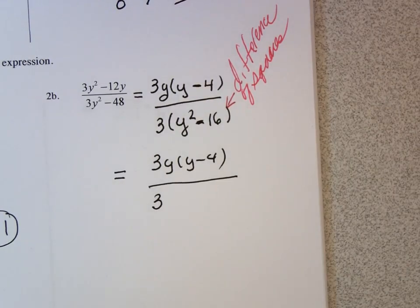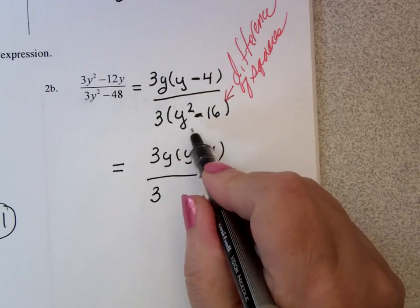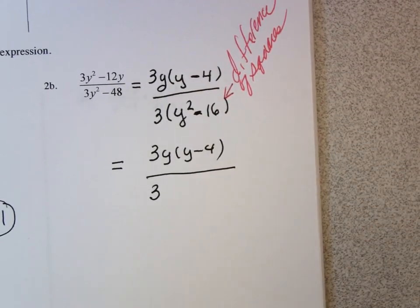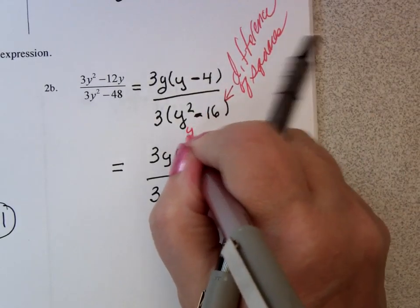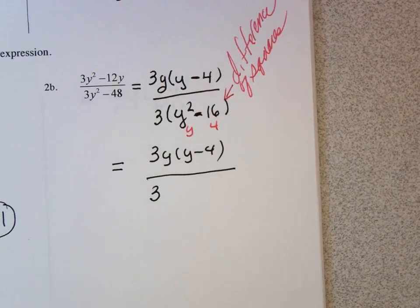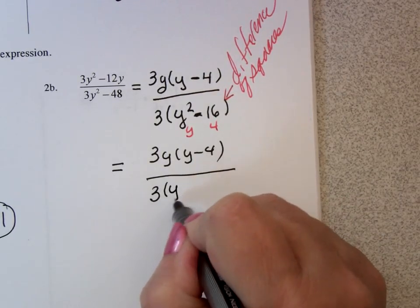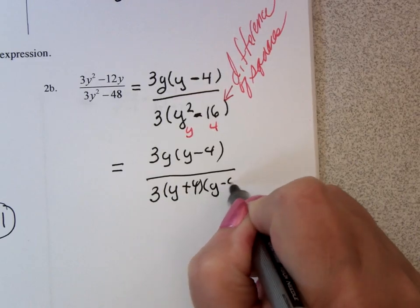The difference of squares. So that y squared minus 16 is going to factor into y plus 4 times y minus 4.